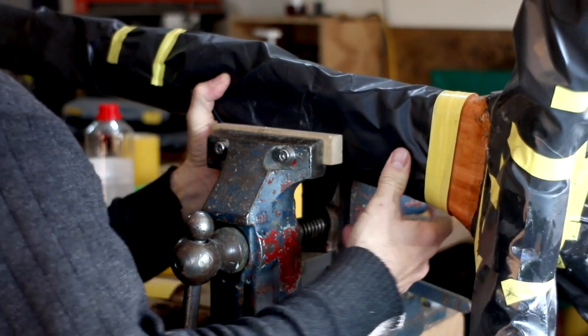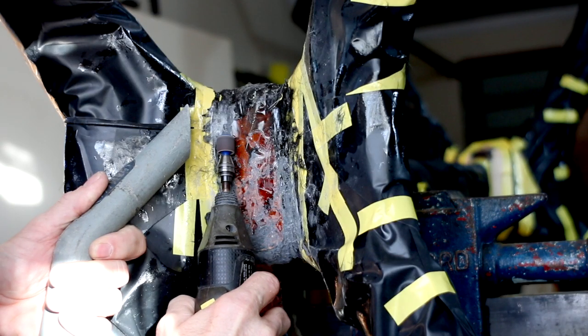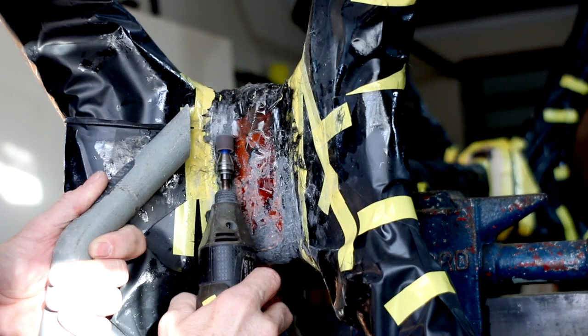Now I can get the table legs into a vice and start working on the joint in preparation for the final layers of carbon fiber.